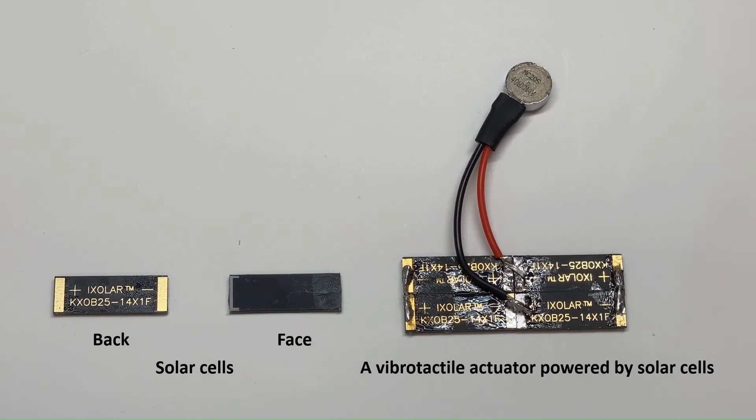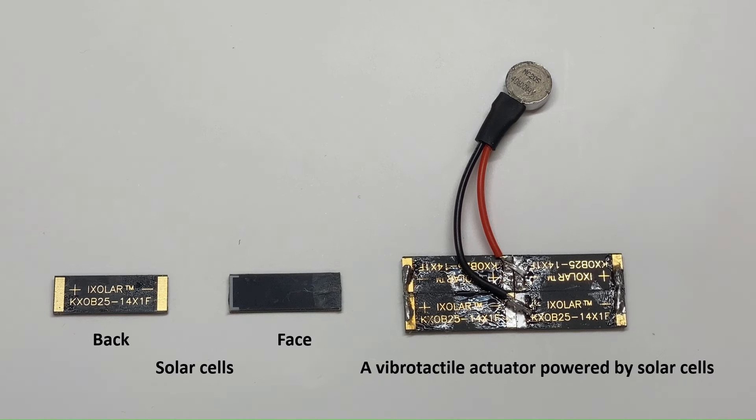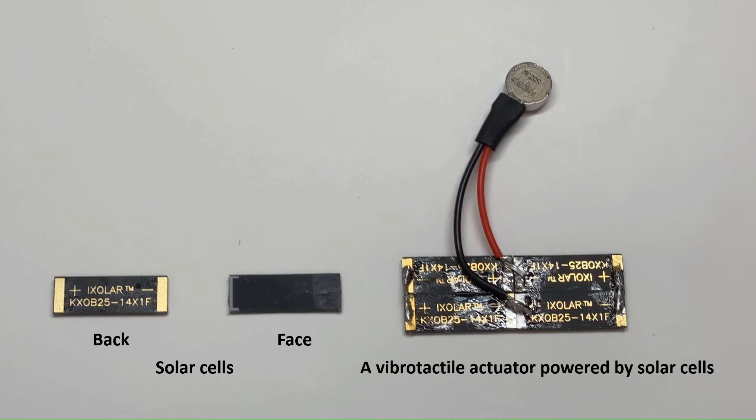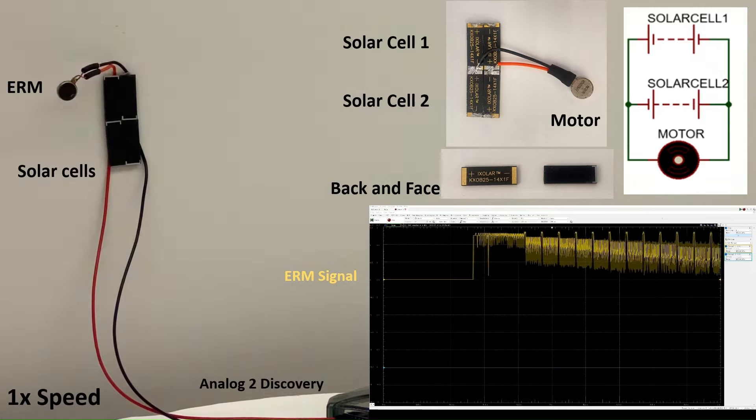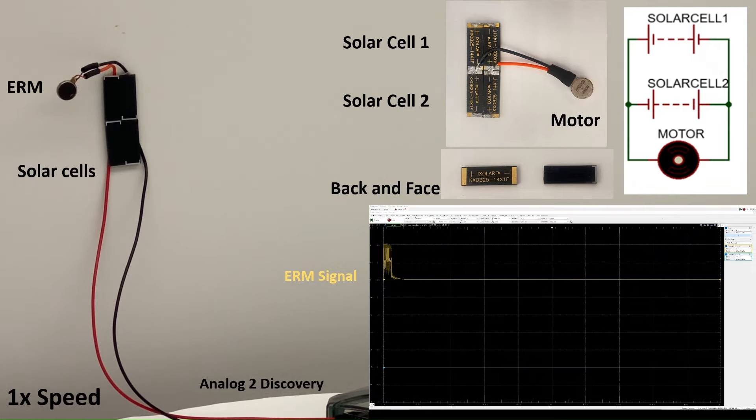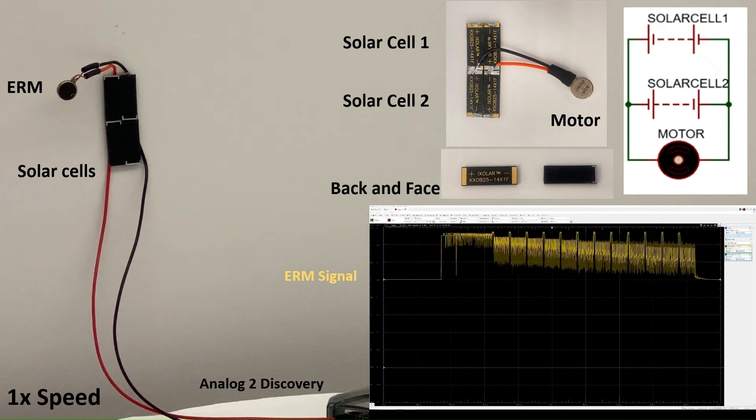Our method replaces the battery with small photovoltaic cells that harness laser energy at any distance across the room. The PV cells are connected in series to generate enough DC power to drive the ERM motor.